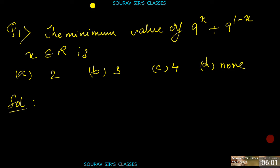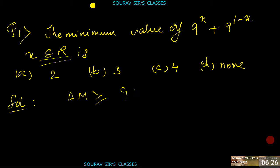Question 1: Find the minimum value of 9^x + 9^(1−x) where x belongs to real numbers. Option A: 2, Option B: 3, Option C: 4, Option D: None of the above.